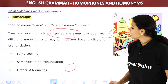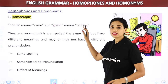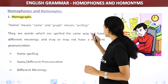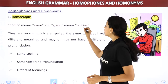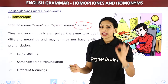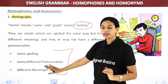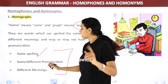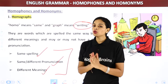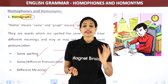Homographs — 'homo' means same, 'graph' means to write. They are words spelled the same but with different meanings. The spelling is always the same; the pronunciation may be the same or different, but the meaning is always different. Remember three things about homographs: same spelling, same or different pronunciation, and different meanings.